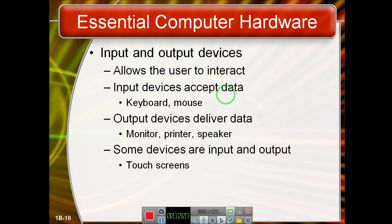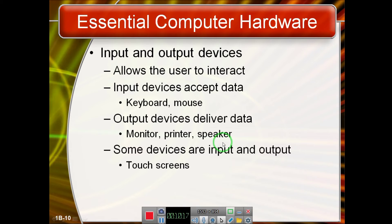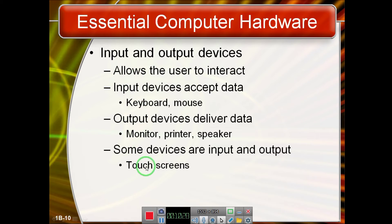Input devices allow the user to interact with the system — examples include keyboard, mouse, scanner, and microphone. Output devices include monitor, printer, and speaker. There are also combined input-output devices like touch screens, OCR (Optical Character Recognition), and OMR (Optical Mark Recognition), which we will discuss in detail in a dedicated chapter covering their functionality and internal architecture.